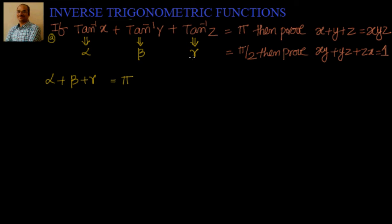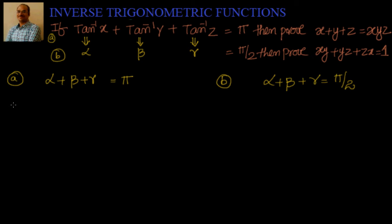This is the first part and this is the second — two problems. First one I am doing here, second one I will be doing here. In the second case, it is alpha plus beta plus gamma equal to pi by 2. Now, if tan inverse x equal to alpha, we know that x equal to tan alpha, y equal to tan beta, and z equal to tan gamma.